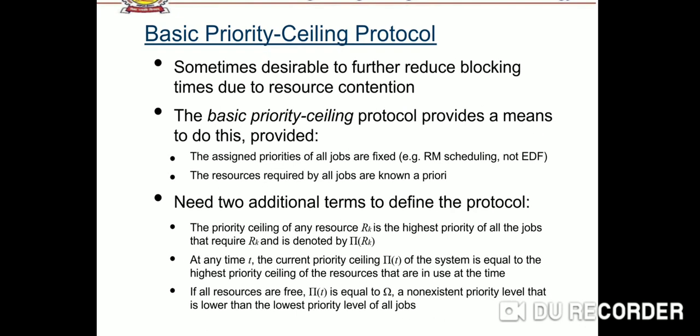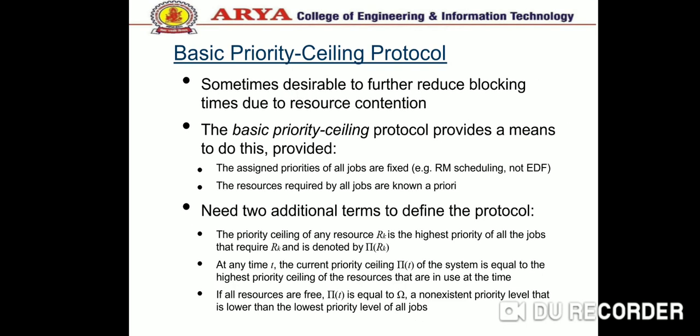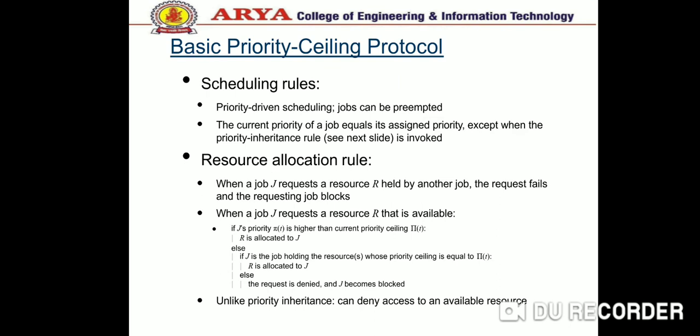Suppose there are resources A and B, both available. For example, T1 requests A and T2 requests B after A is allocated. If π(T2) is greater than π(A), T1 can never preempt T2, so B should be allocated to T2. If π(T2) is less than π(A), T1 can preempt and also request B at a later time, so B should not be allocated to T2 to avoid deadlock.